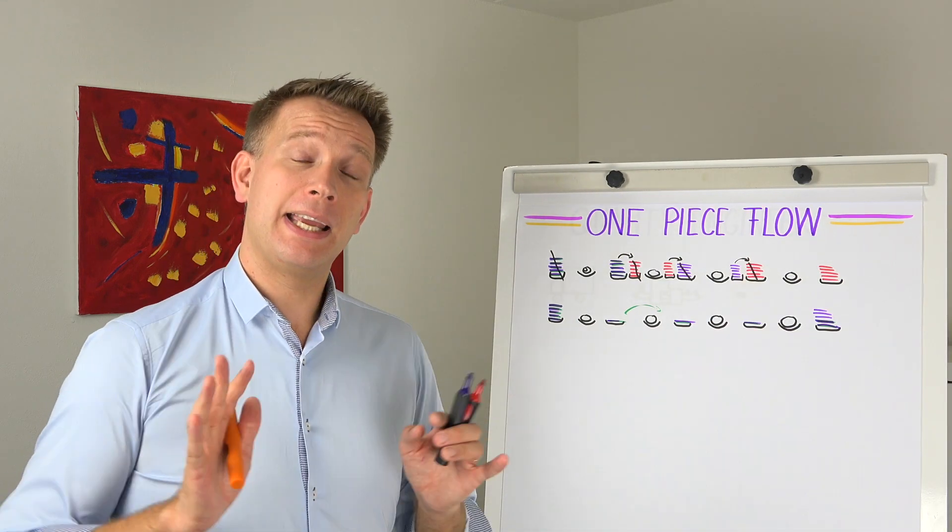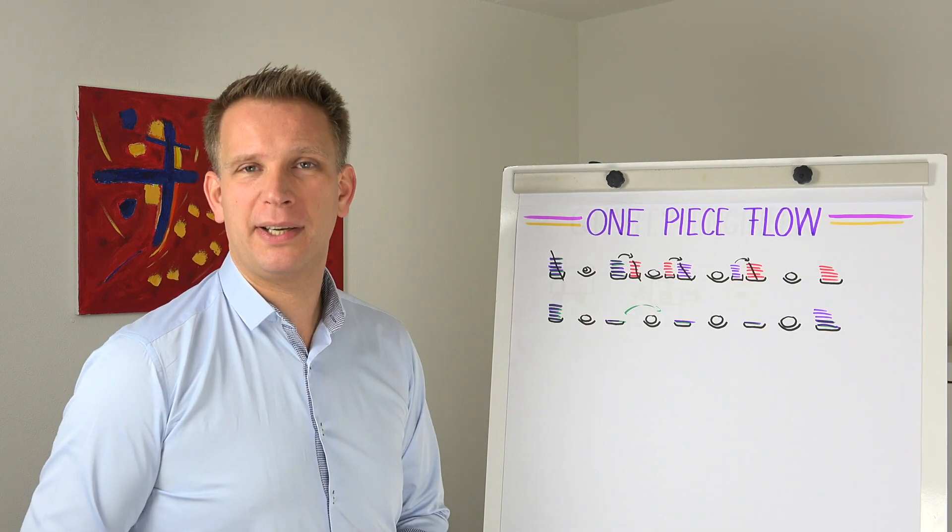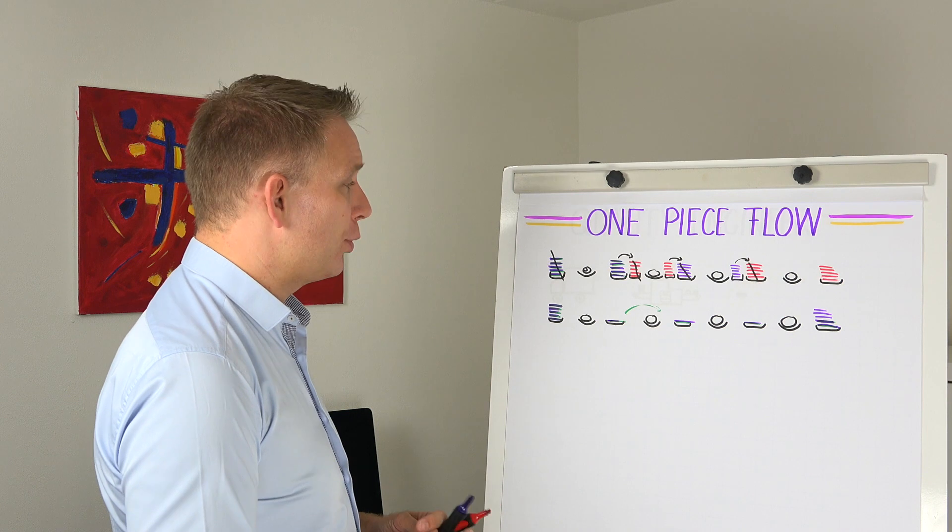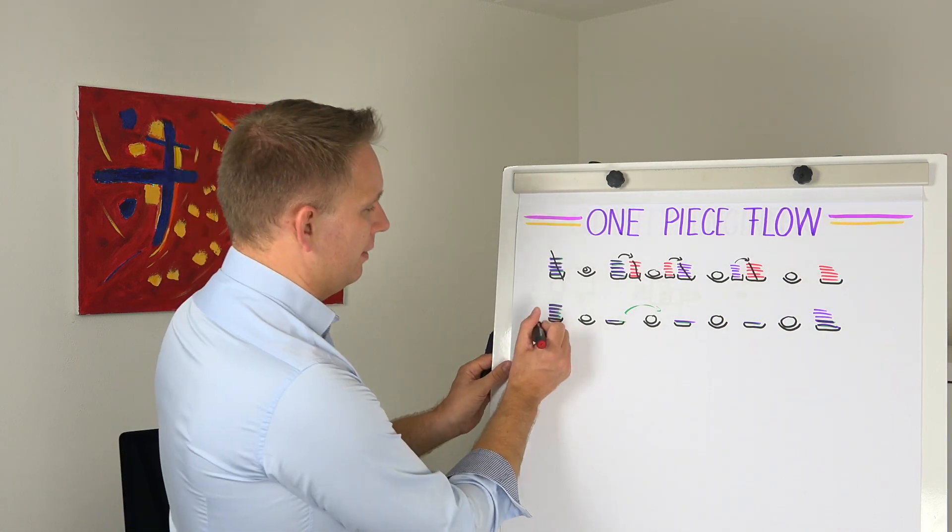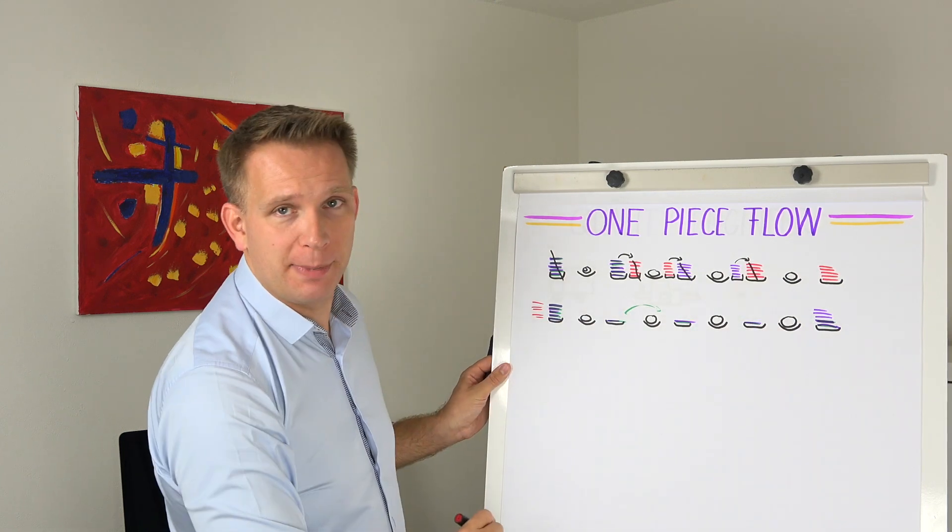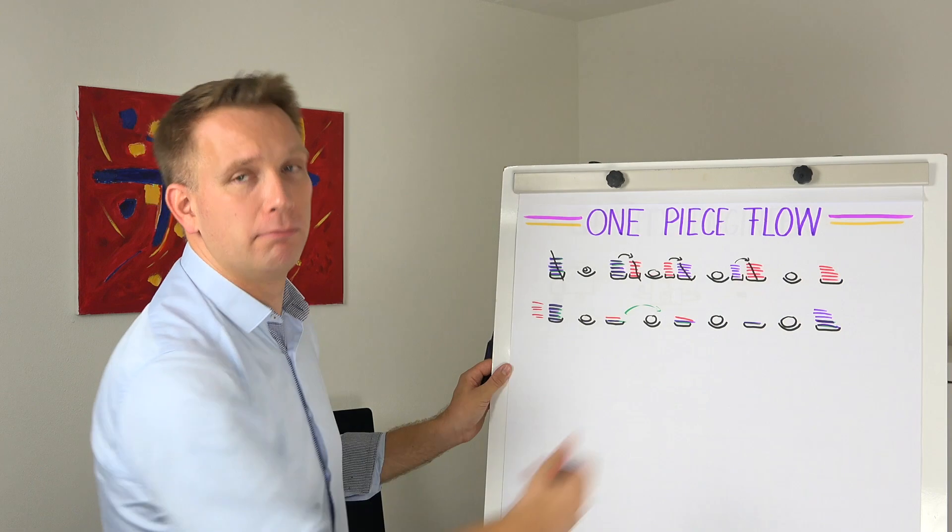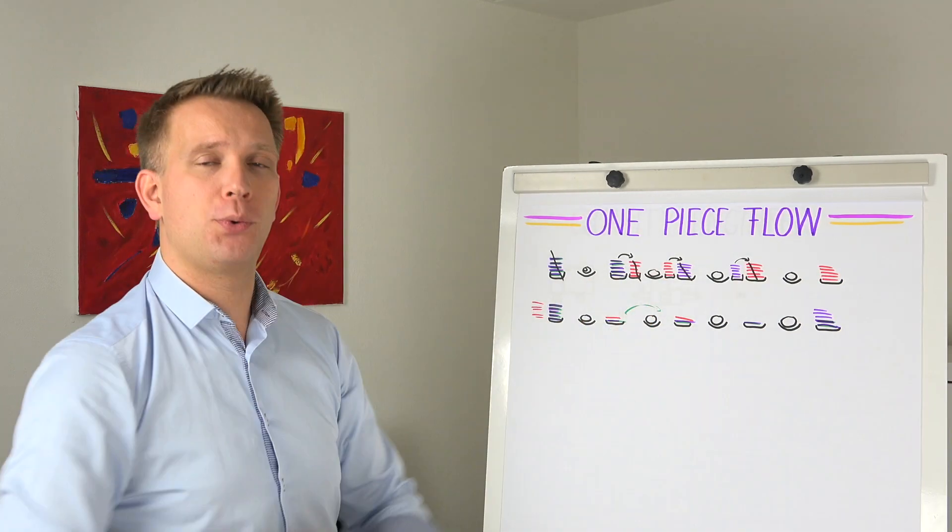So at any point, if that one-piece flow system said, okay, we got enough of the purple stuff, we're going to introduce some red, they will just push it through the system as well. So it will quite quickly, instead of purple, become the red, and that also pushes through the whole system.